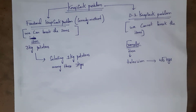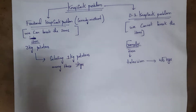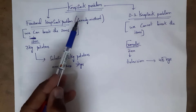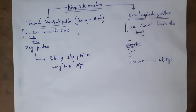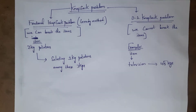Knapsack problems are classified into two types: fractional knapsack problem and zero-one knapsack problem. The fractional knapsack problem follows the greedy method — in this we can break items. For example, if I have three cases of potatoes I can select just one kg, meaning I can break items. In zero-one knapsack we cannot break items — for example, a television cannot be broken.